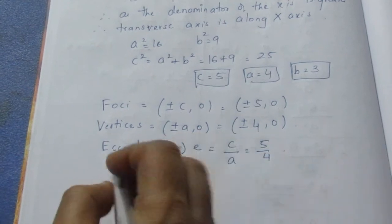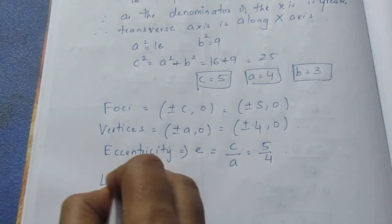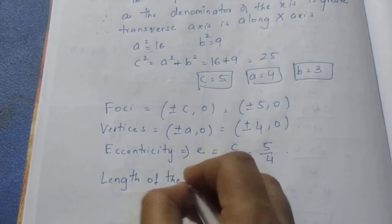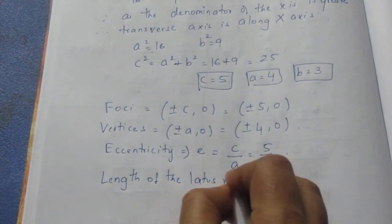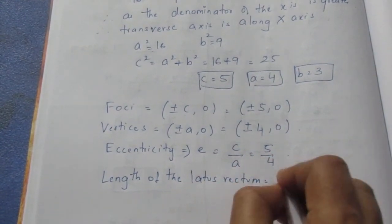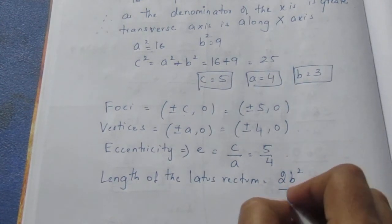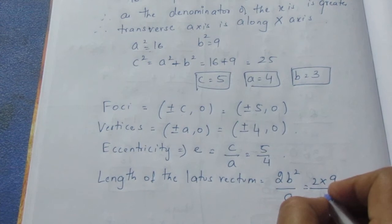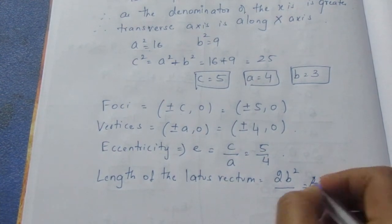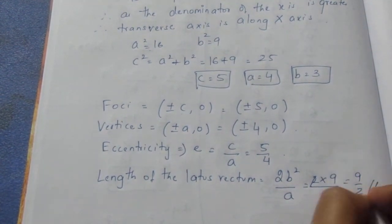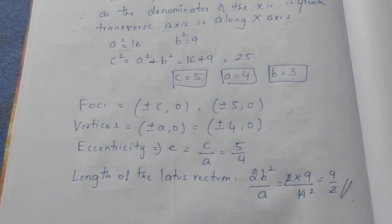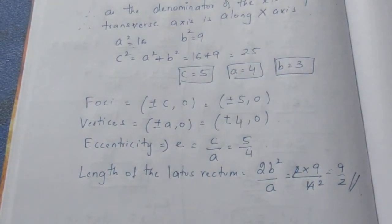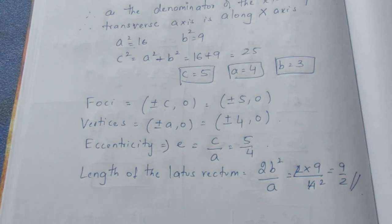Next, they have asked for the length of the latus rectum. The formula is 2b²/a, which is 2 × 9 / 4 = 18/4 = 9/2. So we have completed what was asked. That is all with this problem. Thank you.